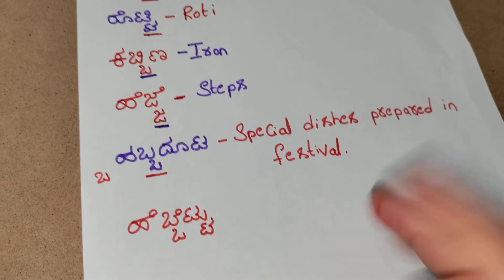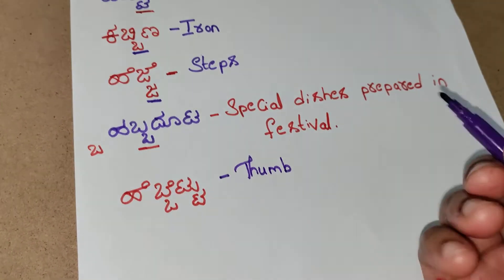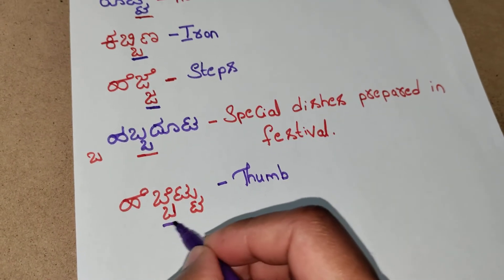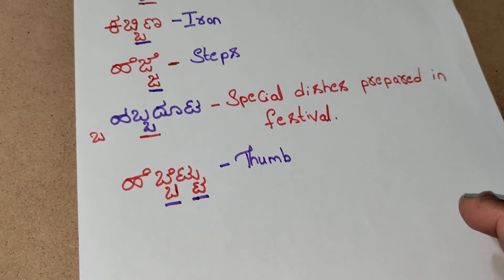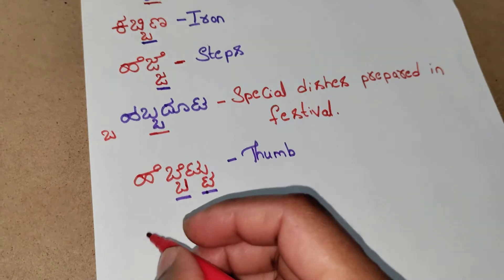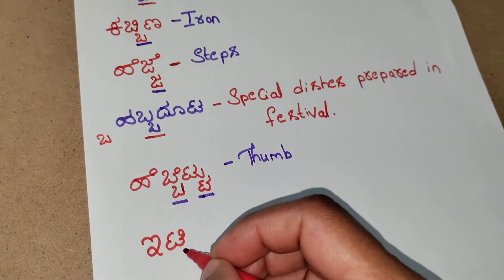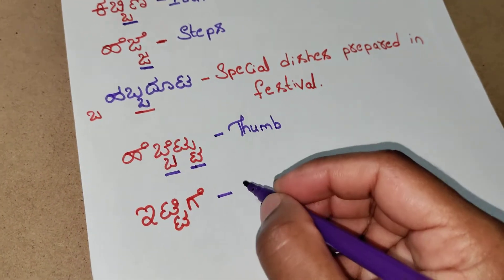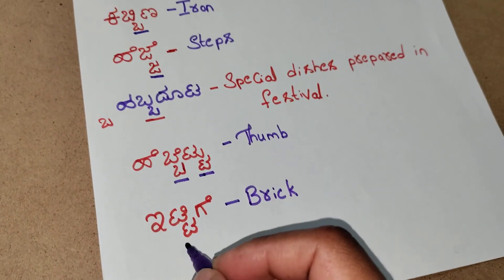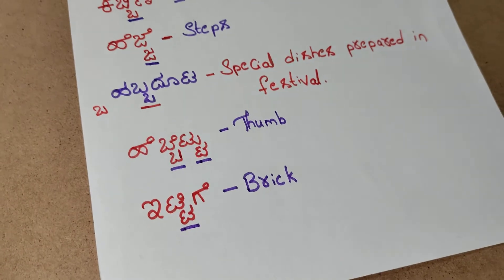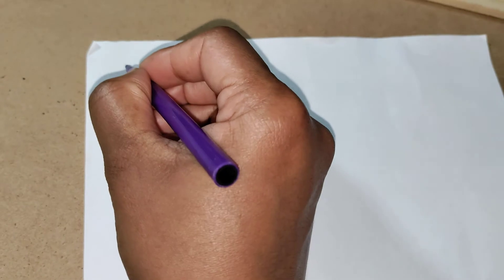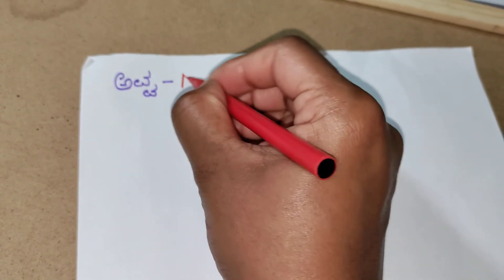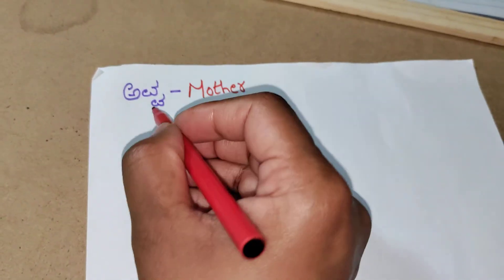The meaning of habitu is thumb. Here the vatakshara — there are two vataksharas: one is bavatu and tavatu. Next word is ittike; the meaning of ittike is brick. Here the vatakshara is tavatu. The next word is ava — the meaning is mother, and here the vatakshara is vavatu.